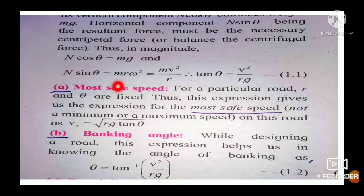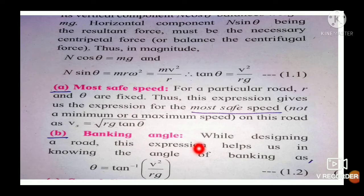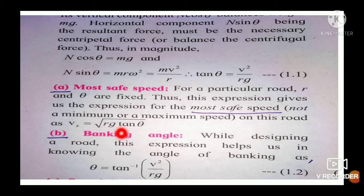Therefore N sin θ = Mv²/R. Solving this, we derived the equation for most safe speed: V = √(Rg tan θ). From this, tan θ = V²/(Rg). This most safe speed on a banked road depends upon the values of R, g, and θ.